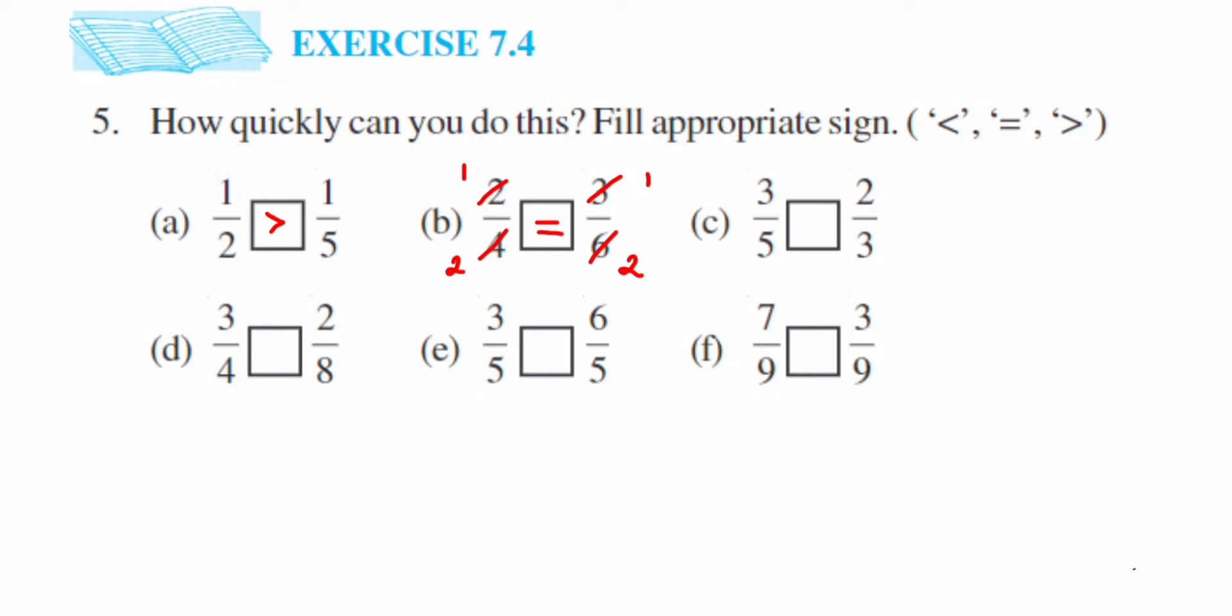The next one, we have 3 by 5 and 2 by 3. The simple way is cross multiply them. So 3 times 3, 9 we'll get. 5 times 2, 10 we'll get. Since 10 is greater, it means 2 by 3 will be greater than 3 by 5. This is an easy way of doing it, cross multiplication. So here we can say 2 by 3 is greater than 3 by 5.